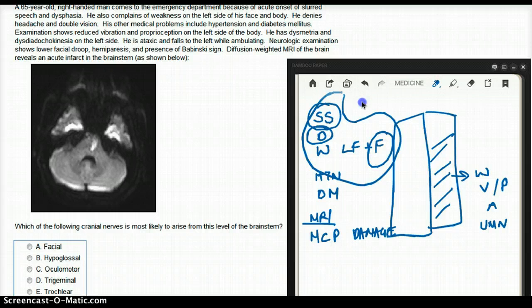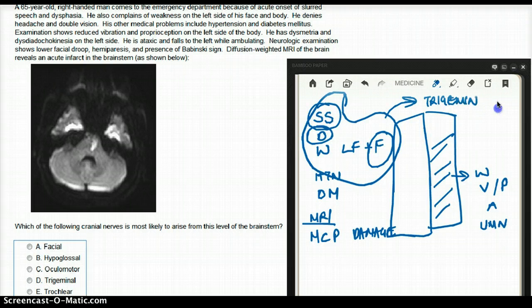All those are associated with one cranial nerve, and that is trigeminal. And when trigeminal is matched to this story, is it arising from the middle cerebellar peduncle? Absolutely, it is arising from the middle cerebellar peduncle. So in this case, the answer is going to be D, trigeminal.